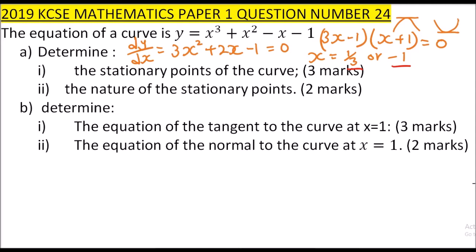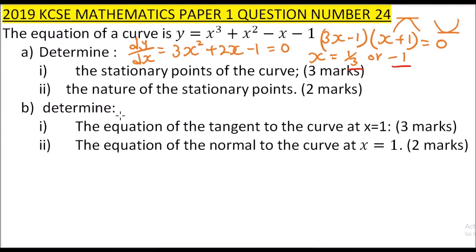Part A(ii): determine the nature of the stationary points. The nature means whether they are minima or maxima. Maxima is when the turning point curves downward, and minima is when it curves upward. To determine the nature, we check with the gradient: at a maximum, the gradient is positive to the left and negative to the right; at a minimum, it is negative to the left and positive to the right.